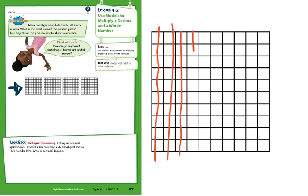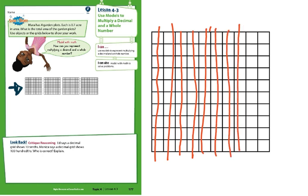eight, nine, 10. Okay. So that should show 10 tenths. Okay. So there are 10 groups of 10 in there. So Ed is correct.